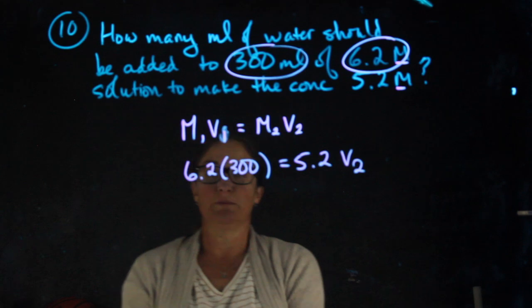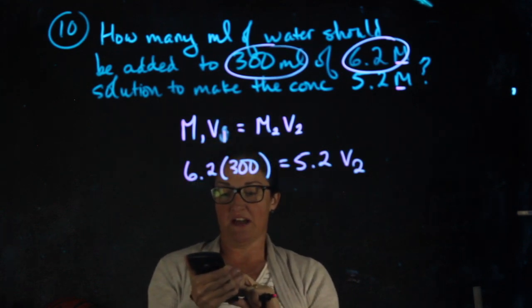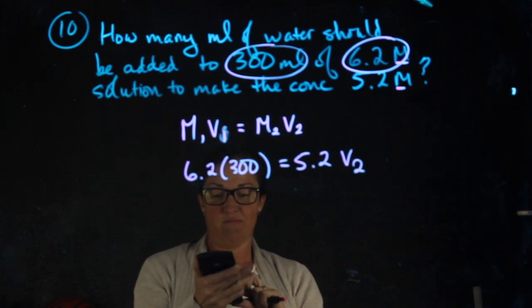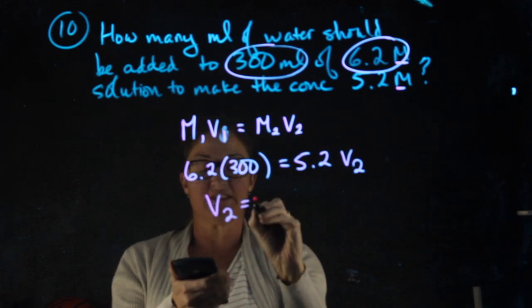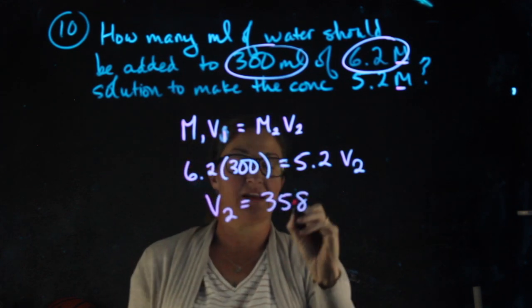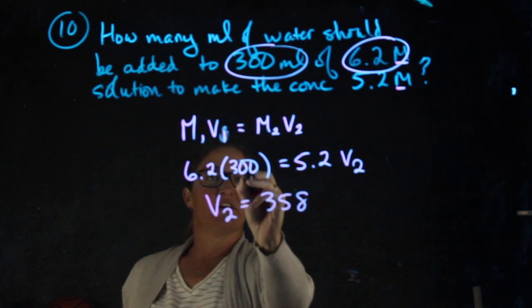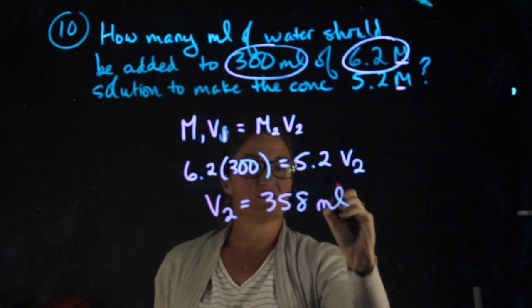So 6.2 times 300 divided by 5.2 gives me V2, which is going to be 358. Since my first volume was in milliliters, my second volume is in milliliters.